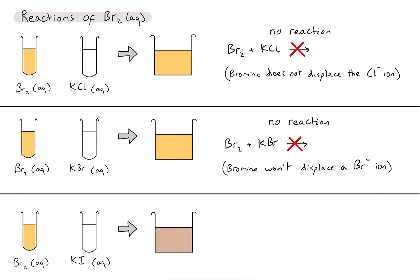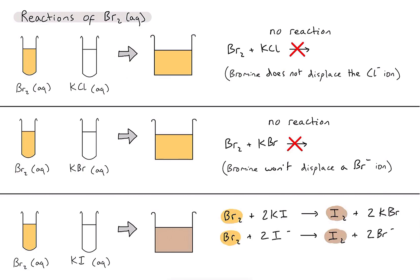Finally, what about bromine and potassium iodide? Here we can see a visible change — we've got that distinctive brown colour of iodine, so something has obviously happened. The bromine has displaced the iodide ion by becoming bromide ions, and we have formed iodine in solution. Writing the ionic equation, we again ignore the positive potassium ions since they haven't changed and were floating freely in solution throughout. We can state that bromine has displaced the iodide ion, indicating that bromine is more reactive than iodine.